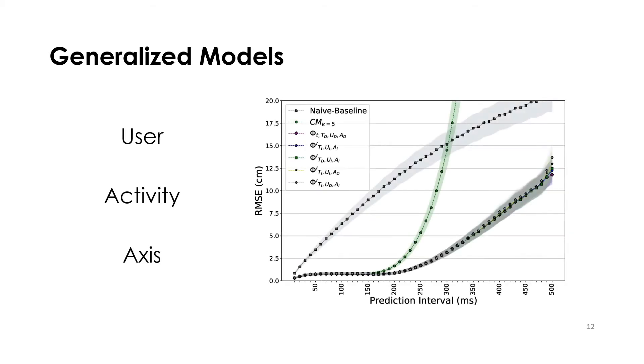So, we iteratively built a generalized model by making the regression user, activity, and axis independent which did not significantly reduce the performance.